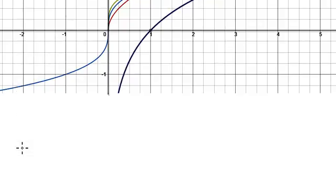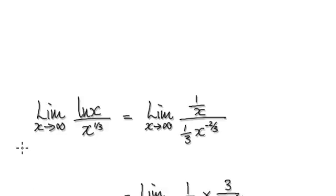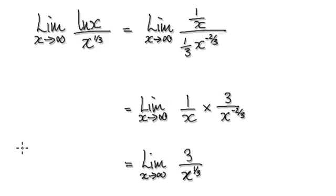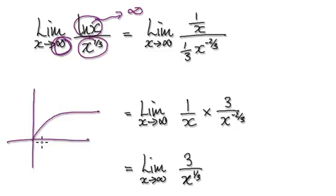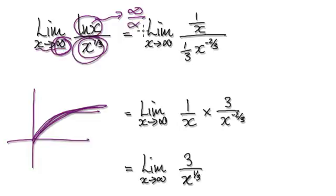To do this, first check that as x tends to infinity, this thing here is going to head towards infinity. As x tends to infinity, remember the square root grows, x to the power of a third still grows — it still grows in this way here. So as x tends towards infinity, this thing here will also tend towards infinity.